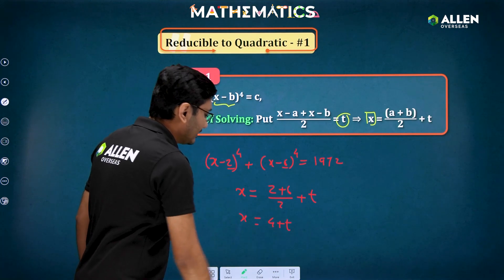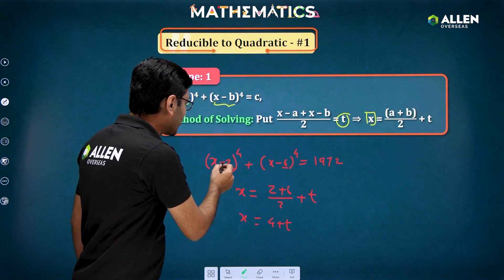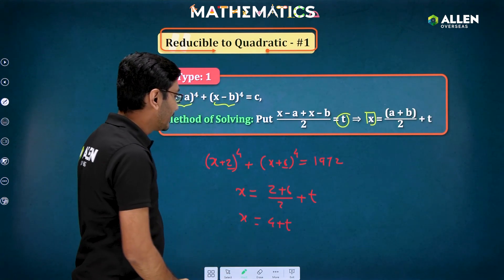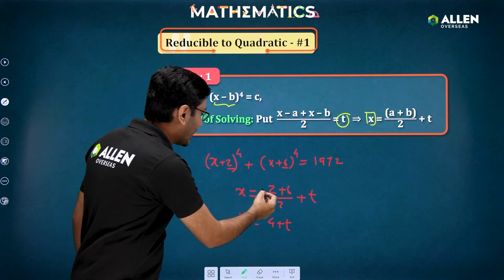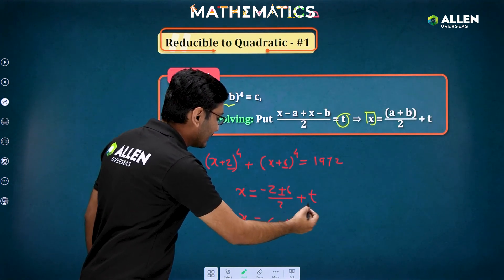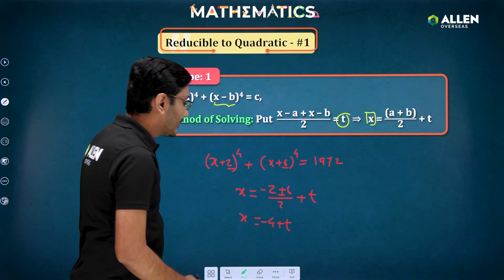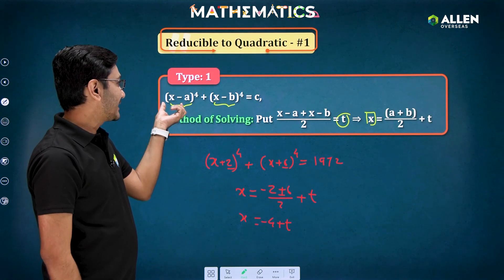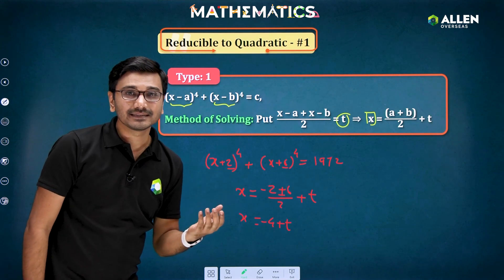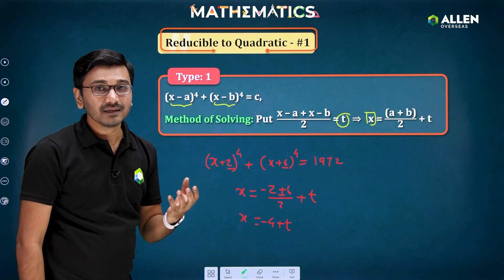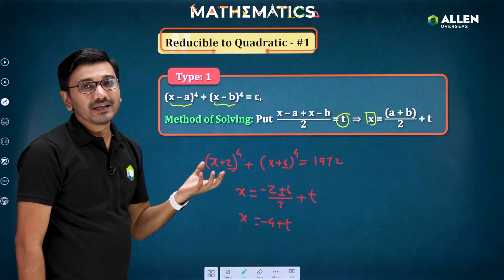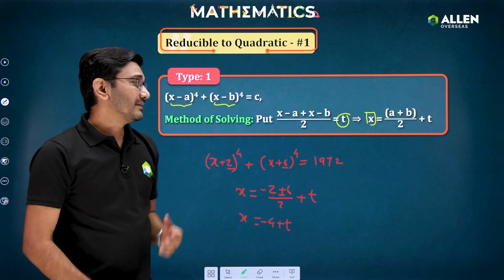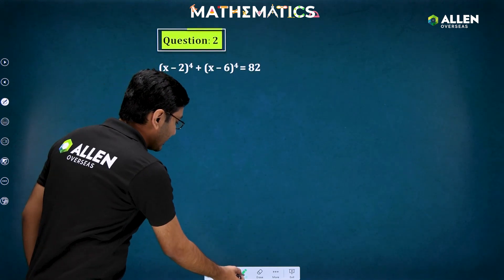If instead of minus 2 you have plus 2 and plus 6, then you put x = (-2 - 6)/2 + t, giving x = -4 + t. So for the type (x - a)⁴ + (x - b)⁴ = constant, you substitute x = (a + b)/2 + t to get the value of x. Let's look at the example so you can understand how to solve such questions.